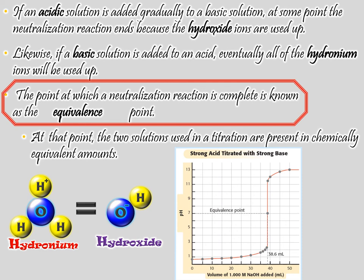There are times when you can reach equivalence at a pH other than 7, but for the labs we're doing, for simplicity's sake, we'll treat pH 7 as the equivalence point. When they're in equivalent amounts, they take each other down, and all you have is the background rate you would have had anyway.